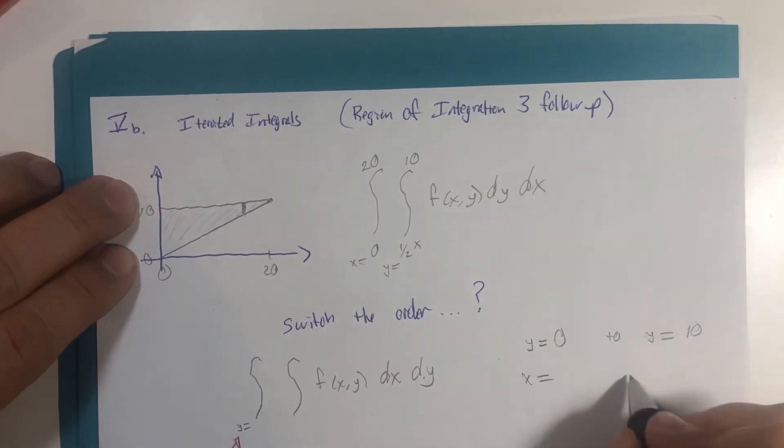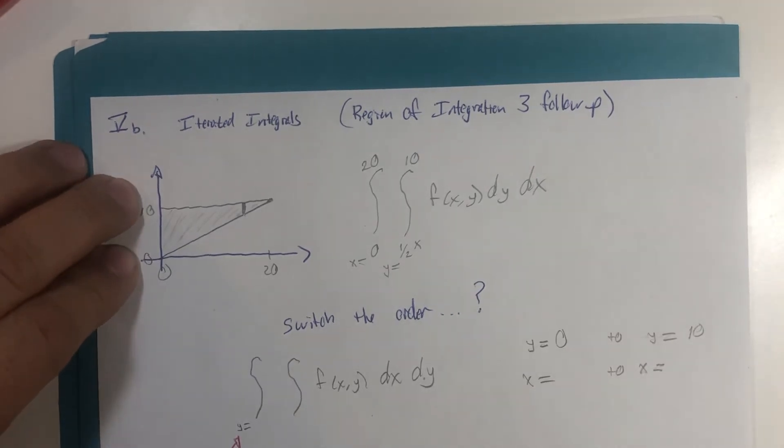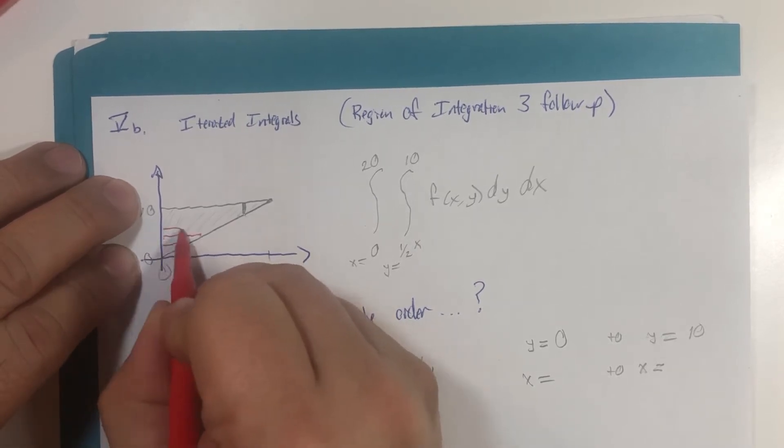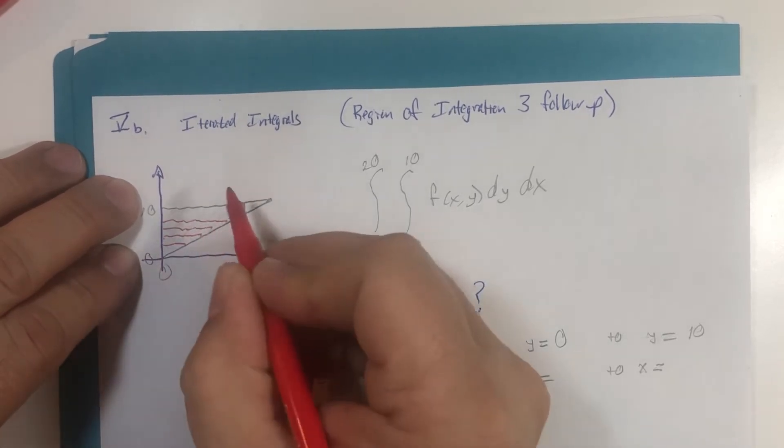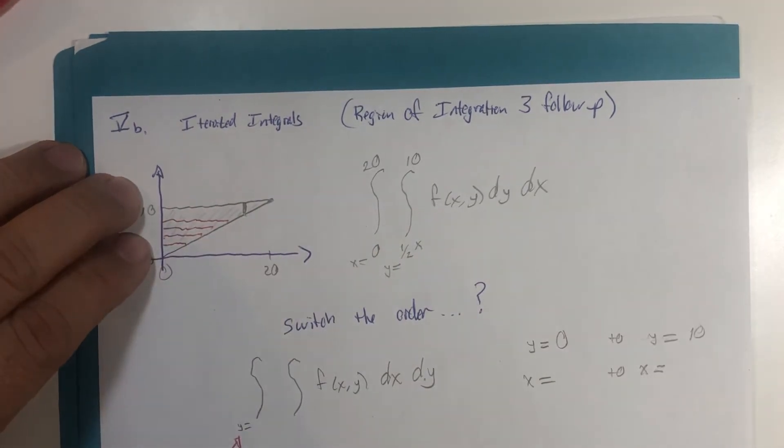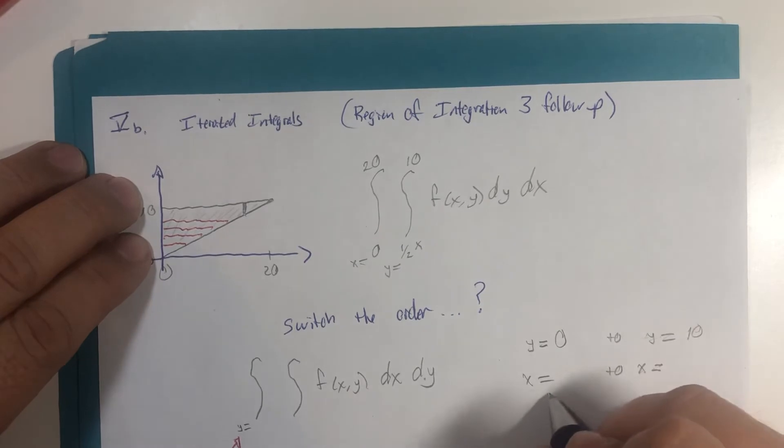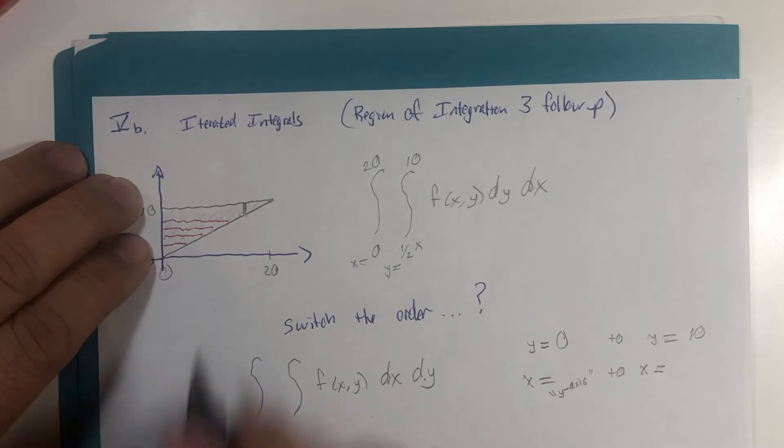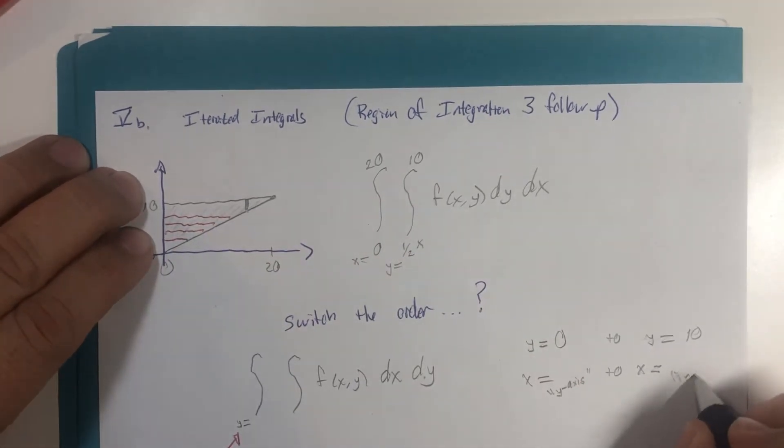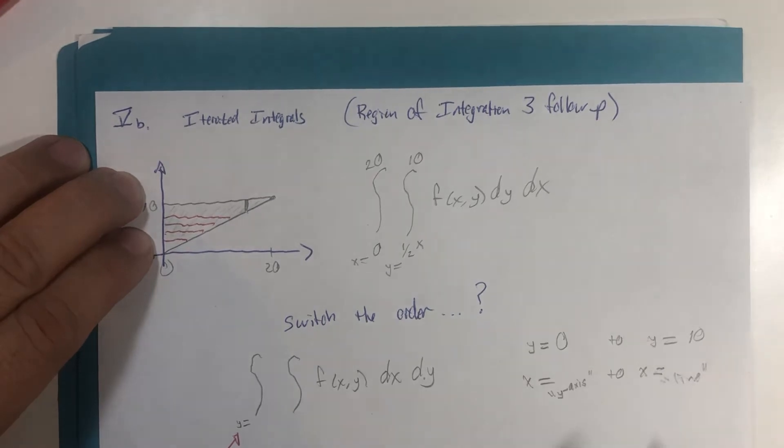Now the x values, let me just draw it again. In every one of these, as we go left to right, the y-axis is the left boundary. And I know this is not an equation, but I'm just going to call it y-axis as a placeholder. And then the line that we were looking at is the right-hand boundaries. So again, that's not an actual equation.